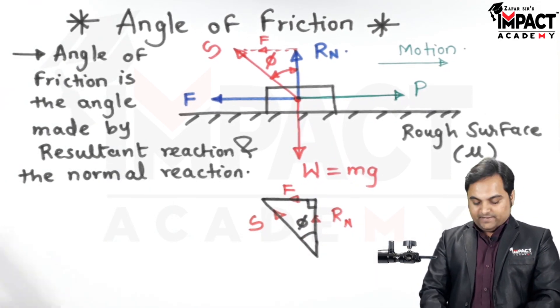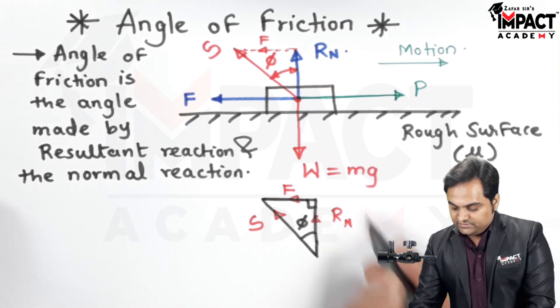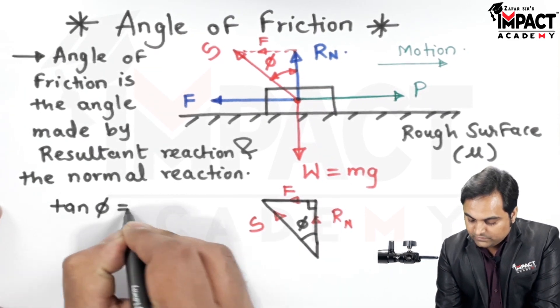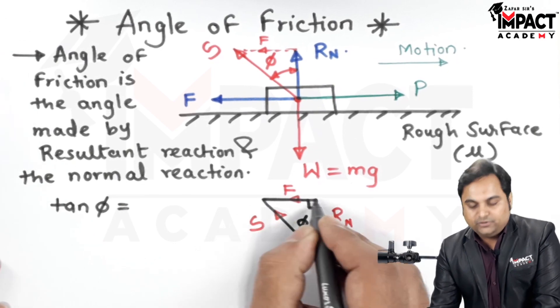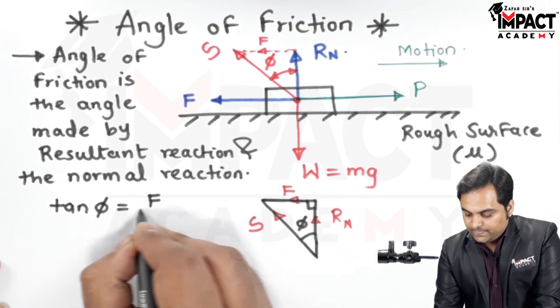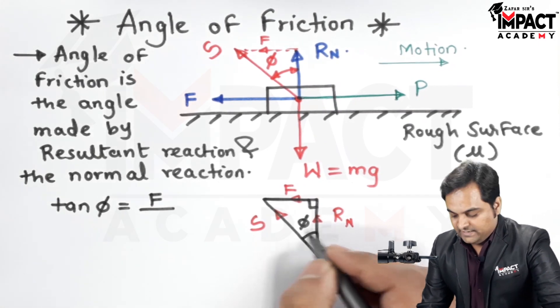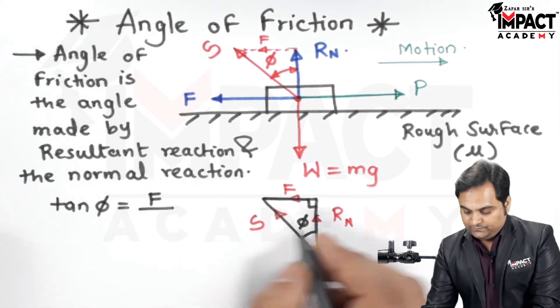And opposing them is this resultant reaction S. So when I need to find this phi I will say that in this triangle tan phi is equal to the opposite side which is the force of friction upon the adjacent side which is Rn because S is the hypotenuse.